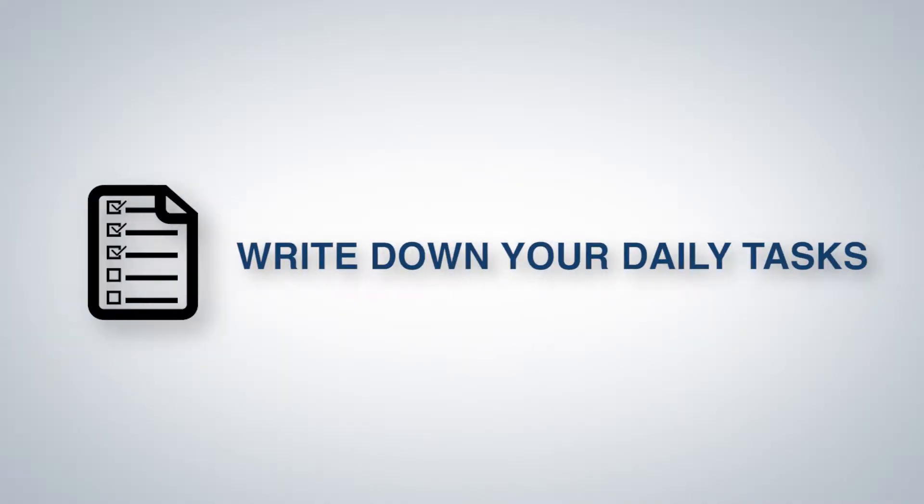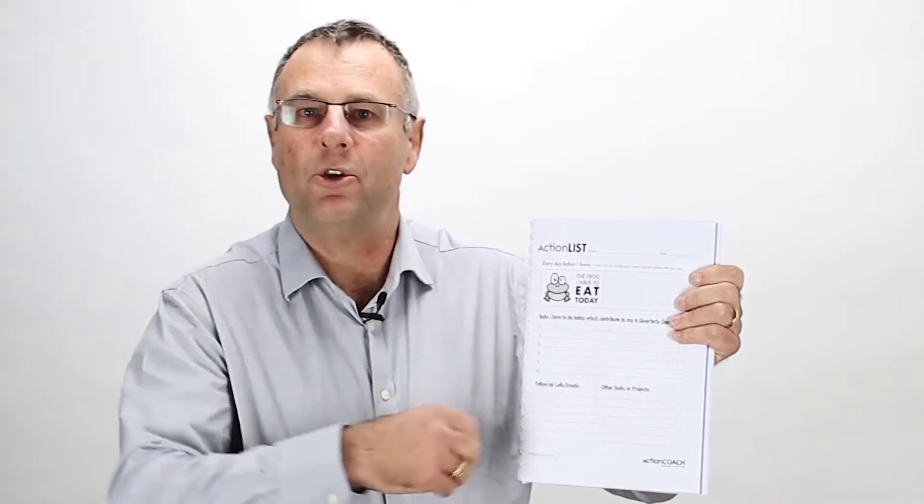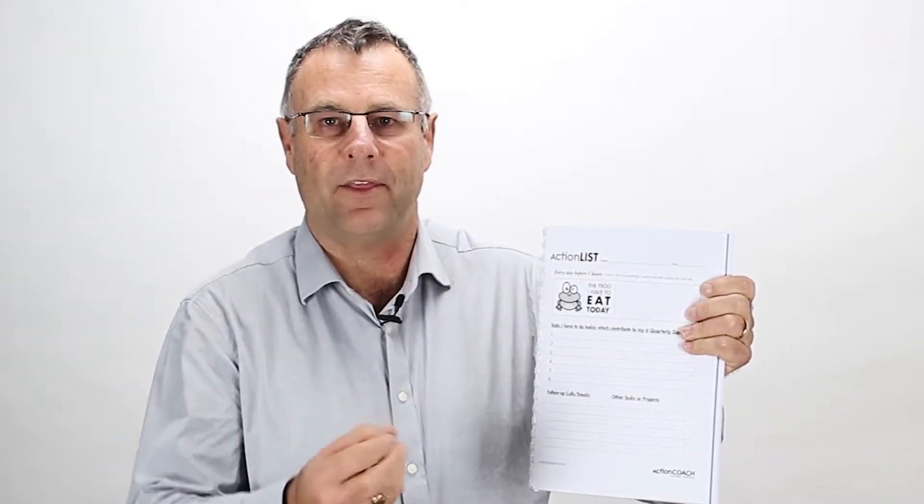After that write down the tasks that you have to do today or the next day to contribute to your six-month plan. Once you've written them down then prioritize them because you're not going to prioritize them right at the start. They're not going to come in the order that you want them to be in.